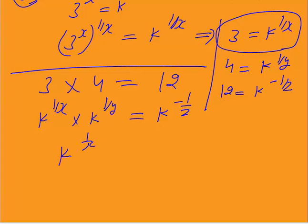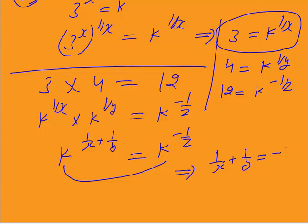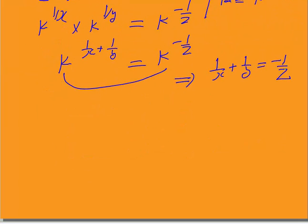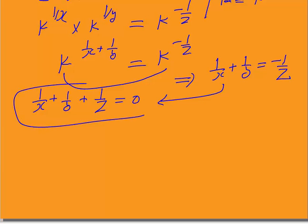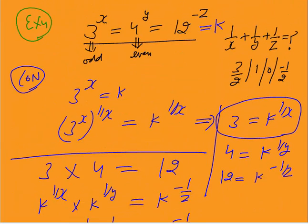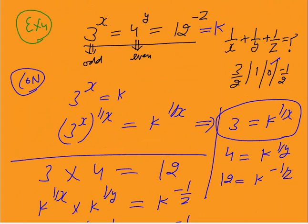This gives k^(1/x + 1/y) = k^(-1/z). Since the bases are the same, the powers must be equal: 1/x + 1/y = -1/z. Bringing everything to one side: 1/x + 1/y + 1/z = 0. So the answer is 0. I have solved this question in a conceptual way.